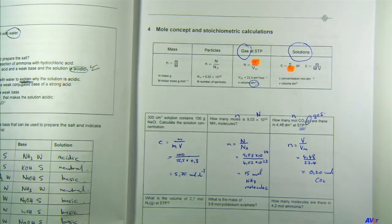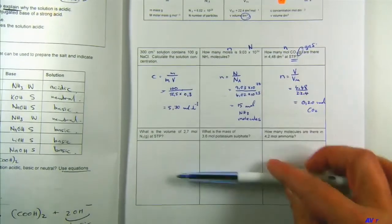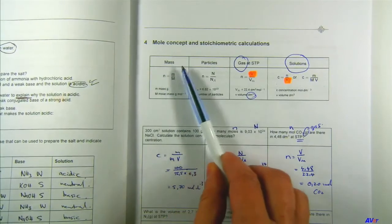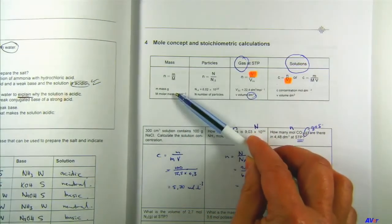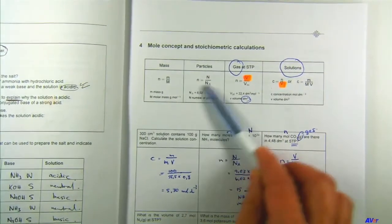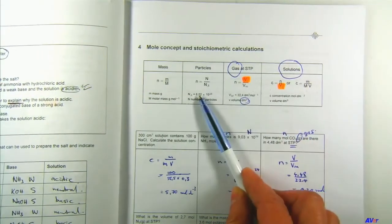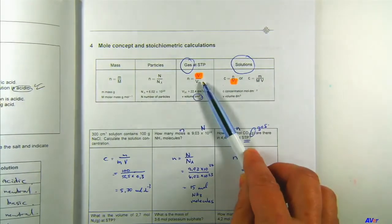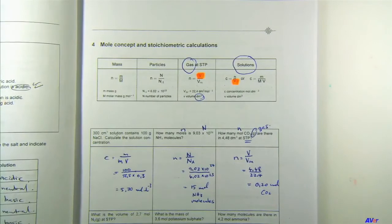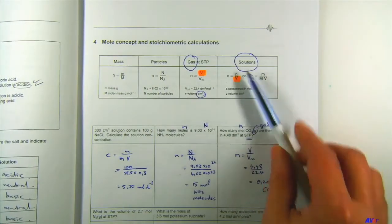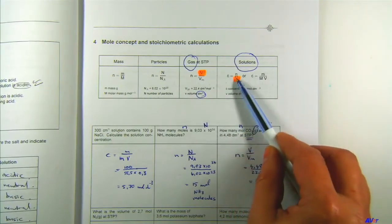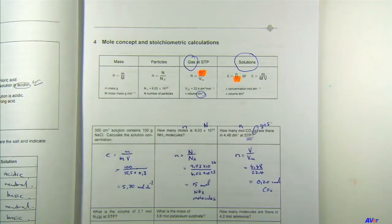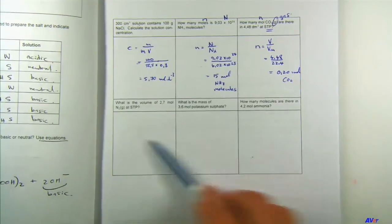So on page 27 we've done the first three. Remember: when given mass, divide by molar mass. When given number of particles, divide by Avogadro's number. When working with a gas at standard temperature and pressure, divide volume by molar volume. For solutions, work with concentration - moles per volume - or replace moles with m over M. All five equations are on the information sheet.